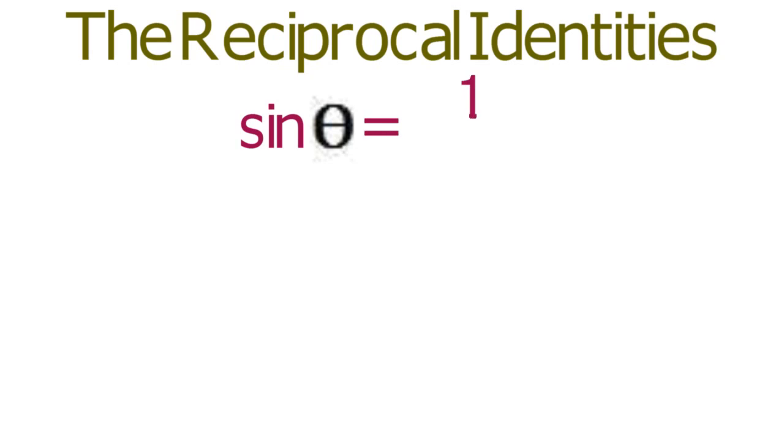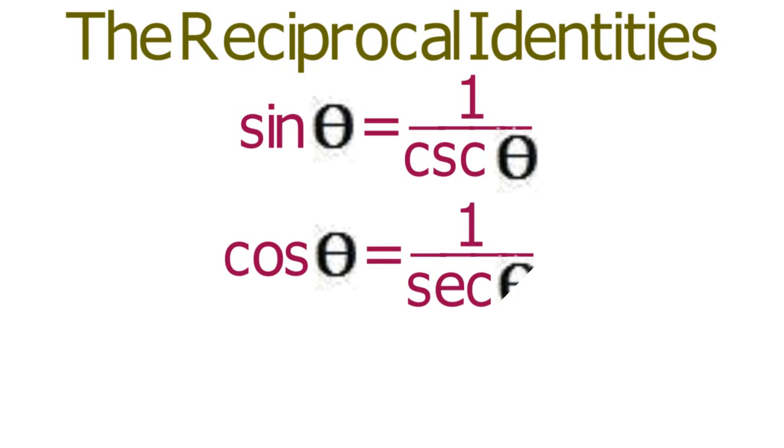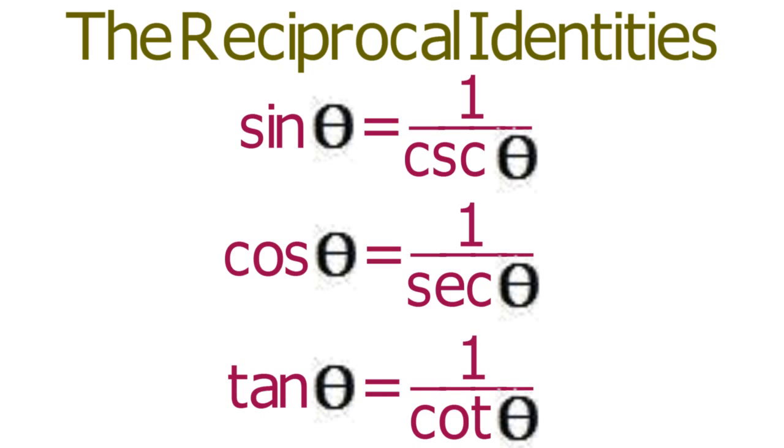Sine of theta equals 1 over cosecant of theta. Cosine of theta equals 1 over secant of theta. And tangent of theta equals 1 over cotangent of theta. You explore these three identities further in Simple Step Math Trigonometry 2.